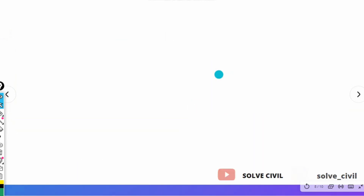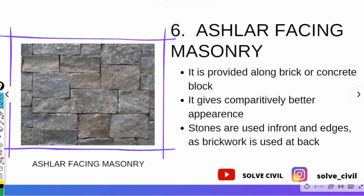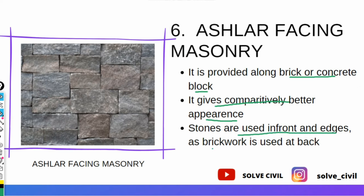The last type of masonry is ashlar facing masonry. It is provided along brick or concrete block and gives a comparatively better appearance. The stones are used in front and edges, while brickwork is used at the back. These are the different kinds of ashlar masonry.